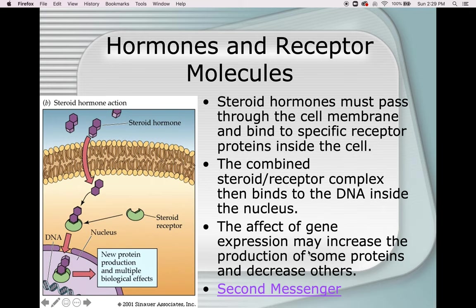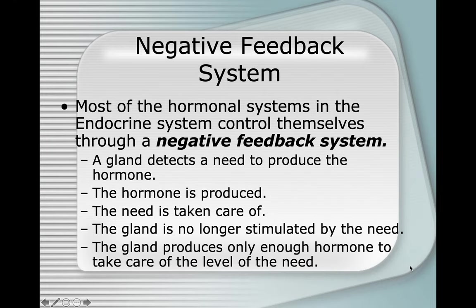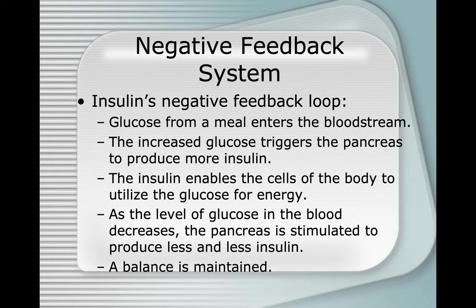The second messenger system does take a little bit of time. Most hormonal systems in the endocrine system control themselves through a negative feedback system. A gland detects a need to produce the hormone, the hormone is produced, the need is taken care of, and the gland is no longer stimulated. For insulin: glucose from a meal enters the bloodstream, triggers the pancreas to produce more insulin, the insulin enables cells to use glucose, and as blood glucose decreases the pancreas produces less insulin — a balance is maintained.